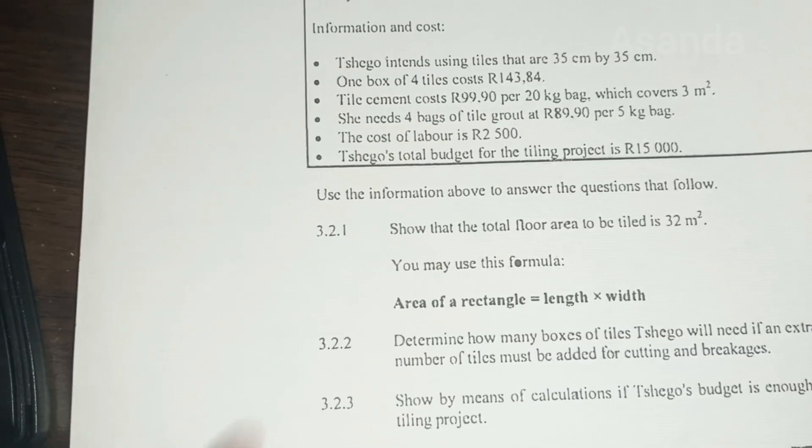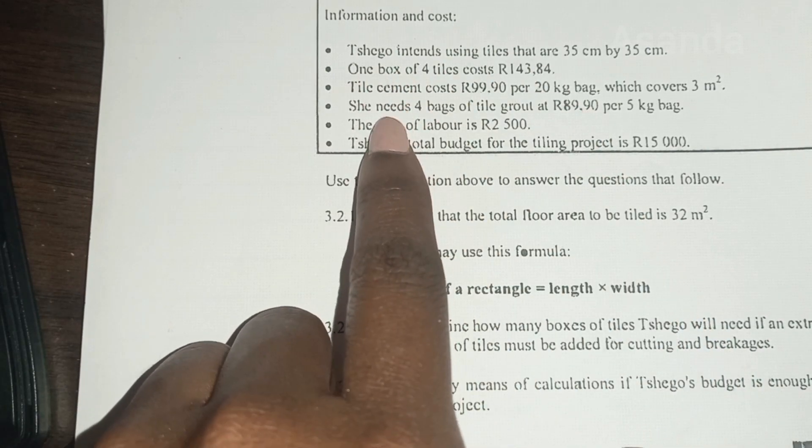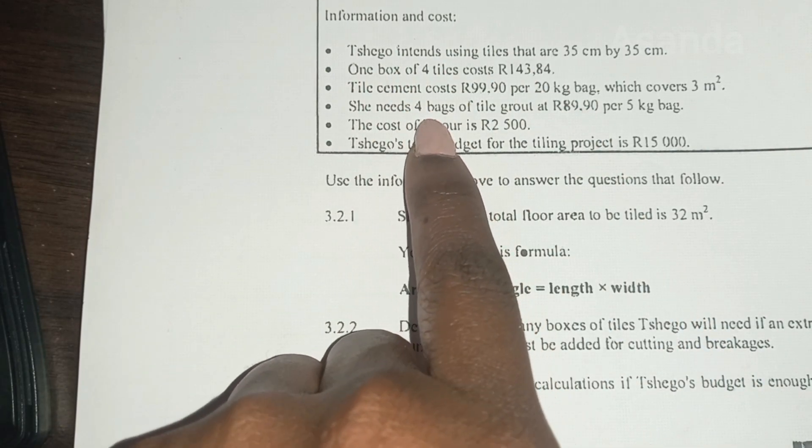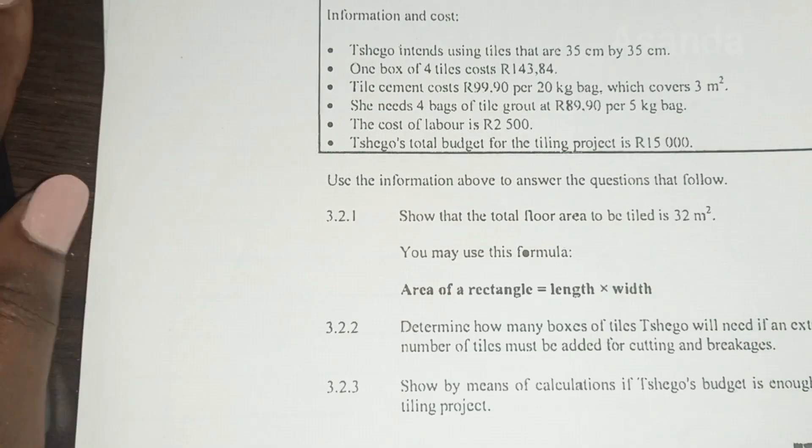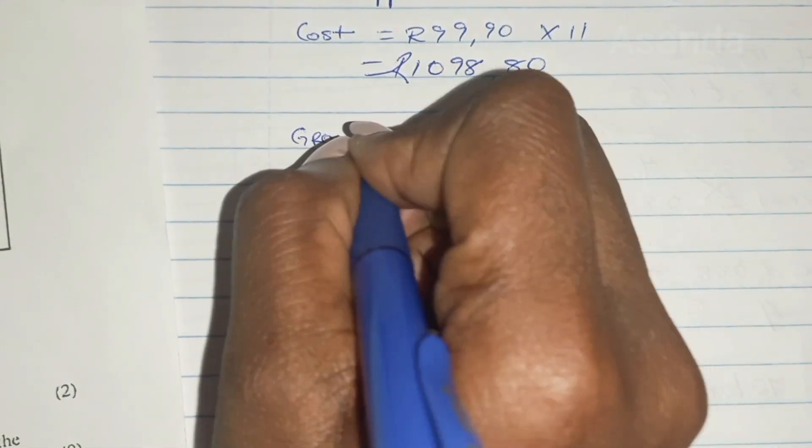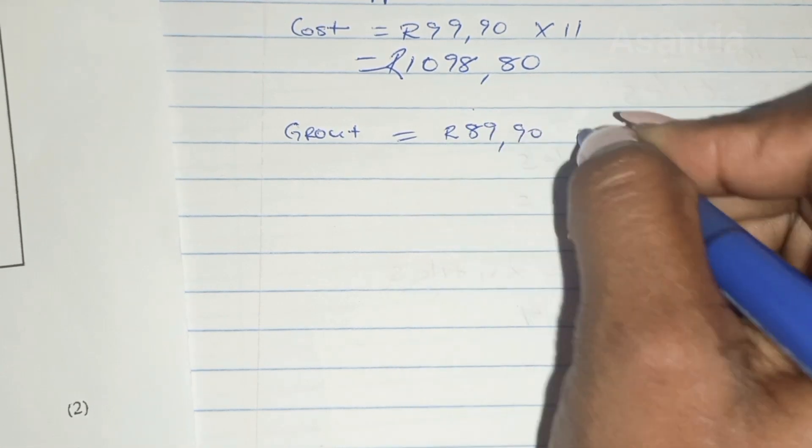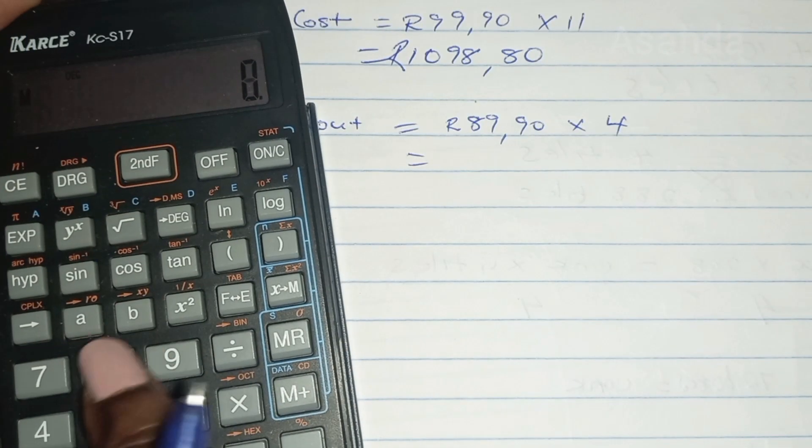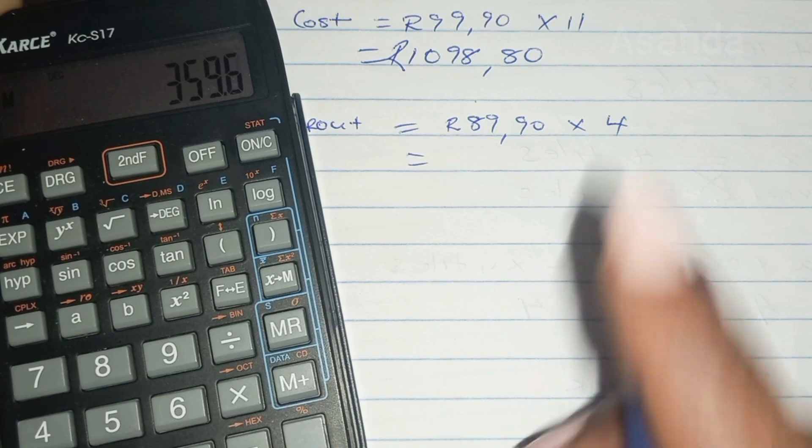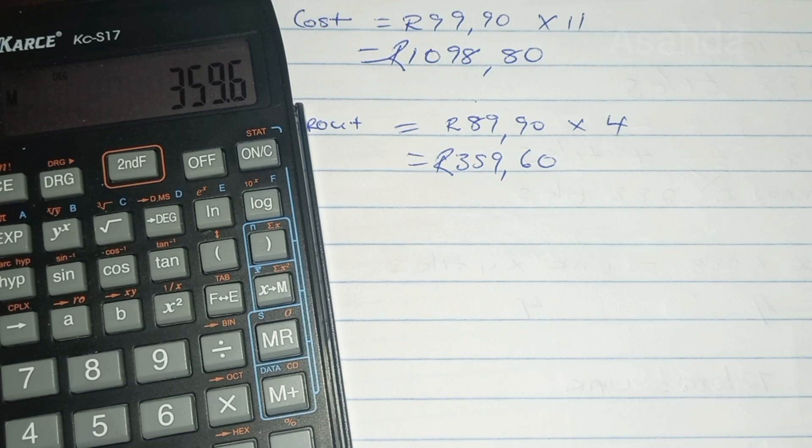And then we're going to go ahead and get the bags, the tile grout. The session is going to need a total of 4. And the tile grout per bag... So per 1 bag is 89.90. And we're buying 4. Let's do grout. Is equal to how much? 89.90 multiplied by 4. And we get that. 89.90 multiplied by 4 is 359.60. And that is that.